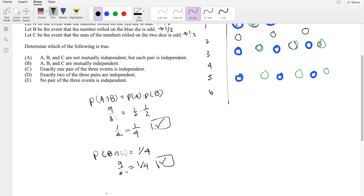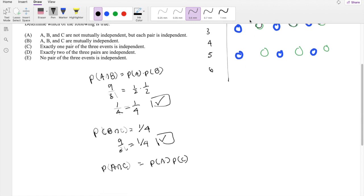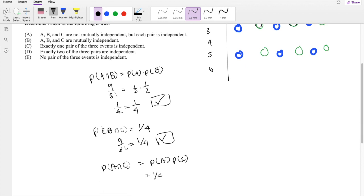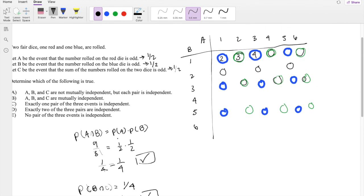And then lastly, probability of A and C. We know probability of A and C is probability of A times probability of C, which we know has to add up to 1/4. So let's look at where A is odd and C is the sum adding up to odd. So 1 is odd, but 2 doesn't add up to odd. But 1 plus 2 is 3, so it's going to be these ones here: 1, 2, 3.